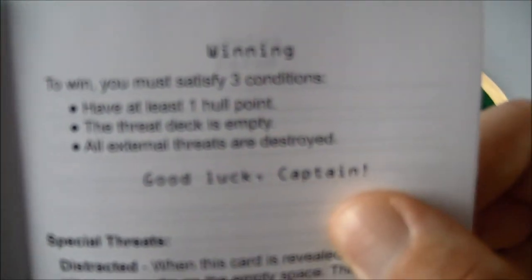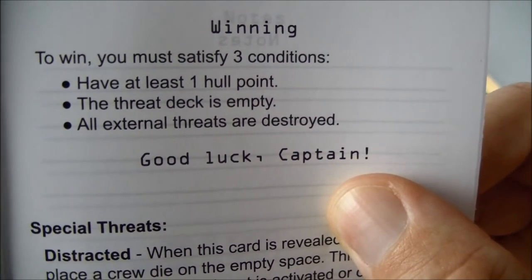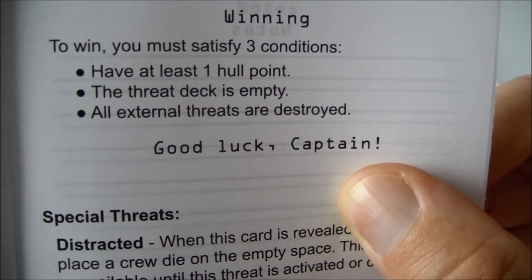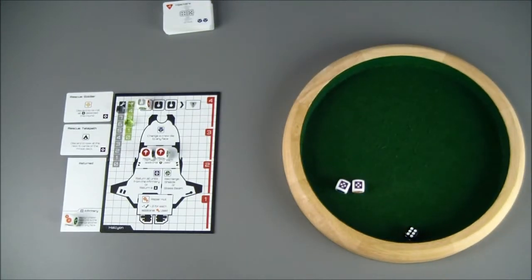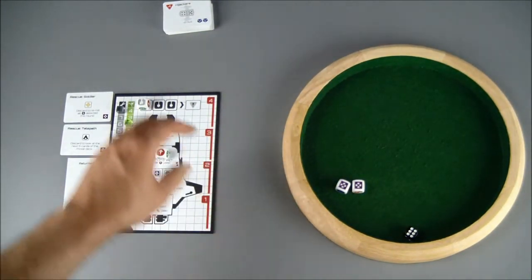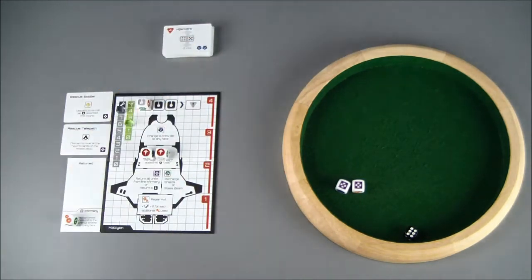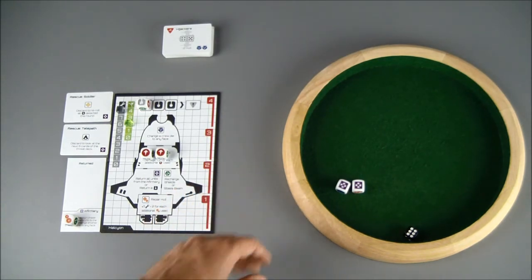The winning condition in the book. To win, you must satisfy three conditions. Have at least one hull point. We do. The threat deck is empty. It is. And all external threats are destroyed. They are. That was a pretty good game. Except for the Ouroboros showing up and slapping me like crazy. But, again, I just wanted to show you what it was like. Show you how devastating that thing is. It's up to you if you want to take it on as an extra challenge.